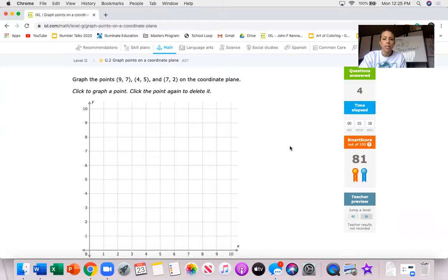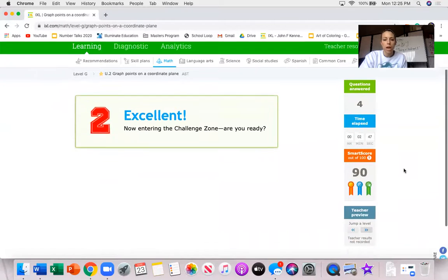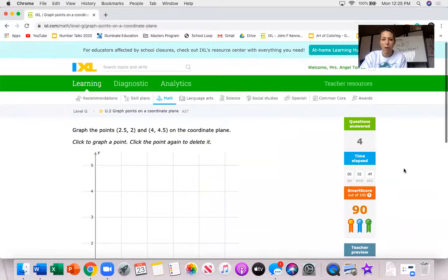In the next part to get a score above 81 to really hit mastery you have to plot three points in the same coordinate plane and then let's jump to the challenge zone. This is what I hope you all get to.